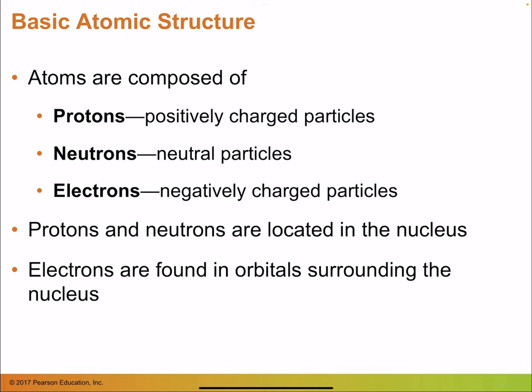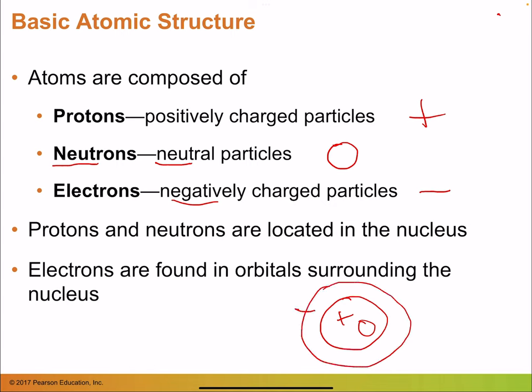Atoms are composed of three components: protons, neutrons, and electrons. Protons are the positively charged particles — 'pro' usually means positive. Neutrons are neutral and carry no charge. Electrons are negatively charged particles. Protons and neutrons are found inside the nucleus, whereas electrons are found in the orbitals around it.